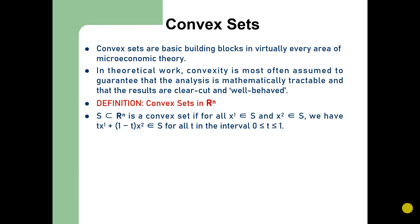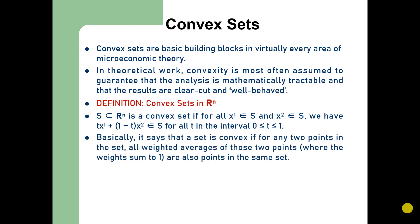Let us suppose there be a set S in n-space. S will be a convex set if for all x1 in S and x2 in S, we have tx1 plus 1 minus t times x2, which belongs to S, for all t in the interval where 0 is less than or equal to t and t is less than or equal to 1. This says that the set is convex if for any two points in the set, all weighted averages of those two points are also points in the same set.